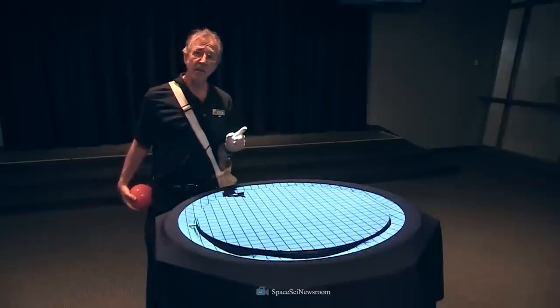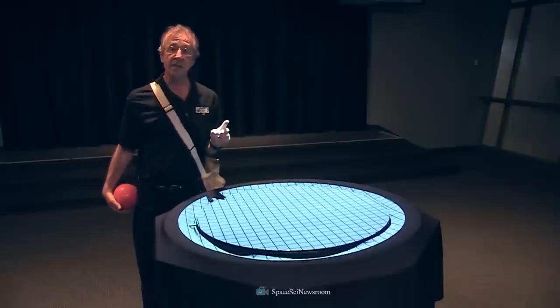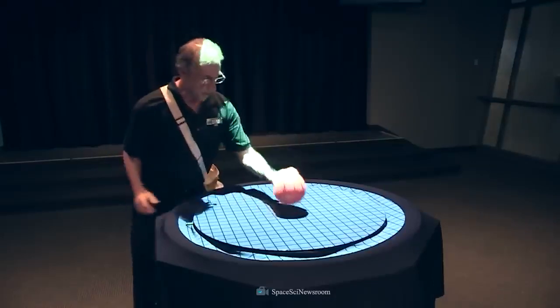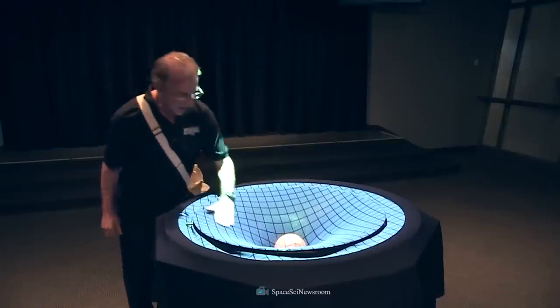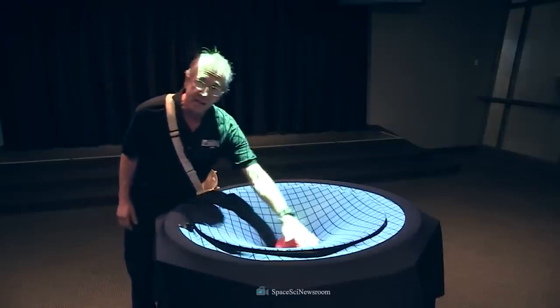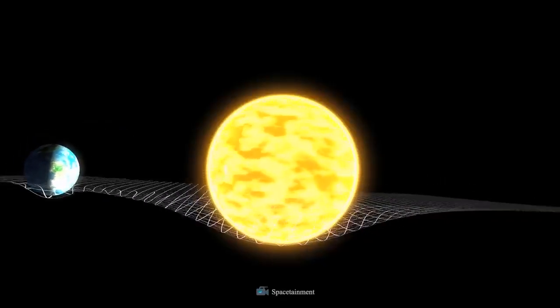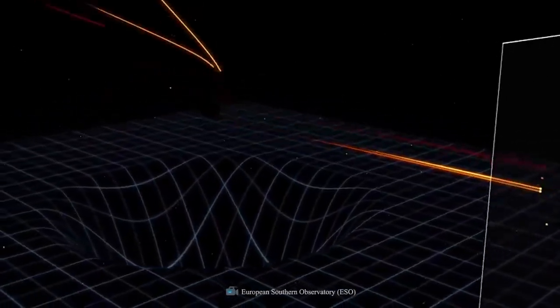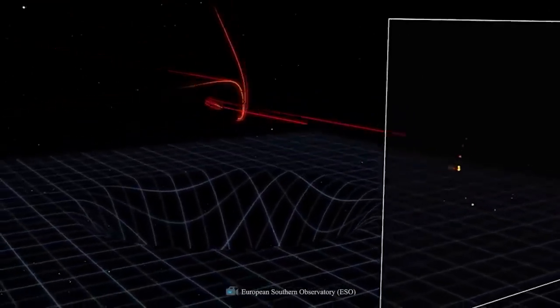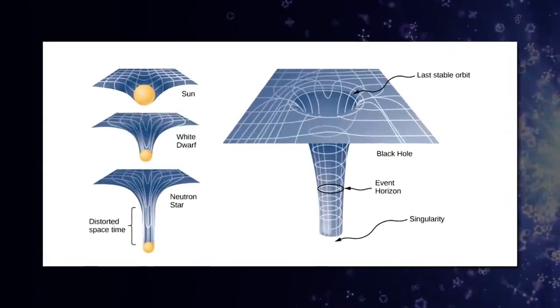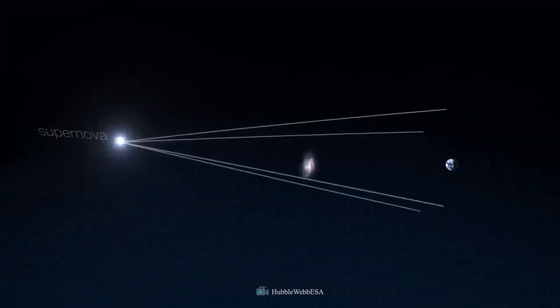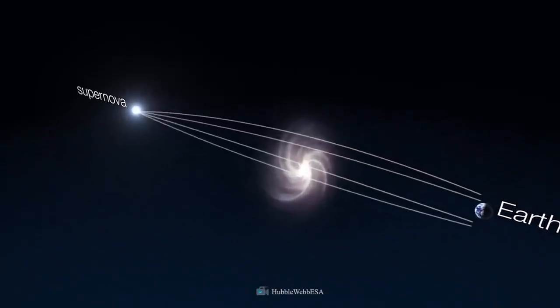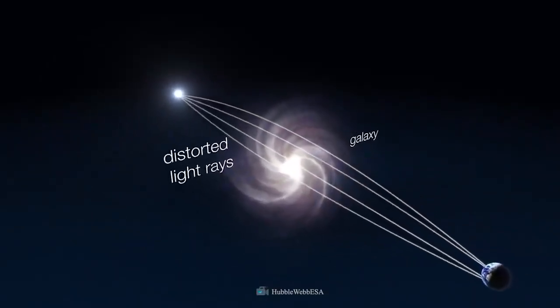Let's picture a sheet stretched out flat to illustrate. When no objects are in the area, the sheet symbolizes empty space. Picture a bowling ball being placed on the sheet now. The bowling ball will drag down the sheet. The sheet would bend in the same way that space-time bends around massive objects. The light waves are deflected as they travel along the curved surface. A greater mass causes a greater bending of light.